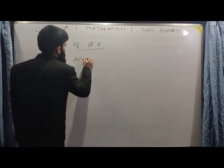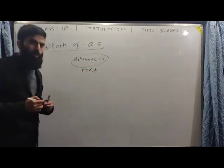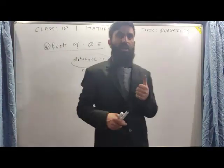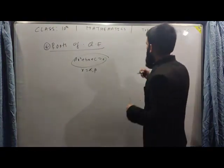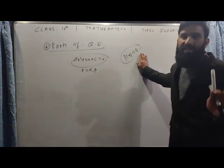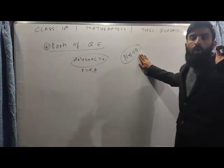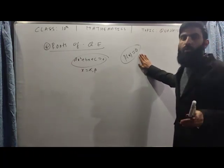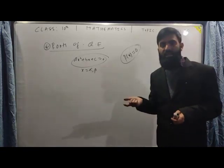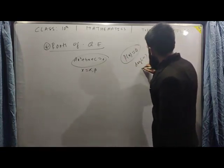For ax² plus bx plus c equals zero, we have two values — alpha and beta — as roots. This is because a polynomial of degree n has n roots. We have discussed the Fundamental Theorem of Algebra — every polynomial equation has at least one root — and the second theorem that the number of roots equals the degree. So our quadratic equation has exactly 2 roots.